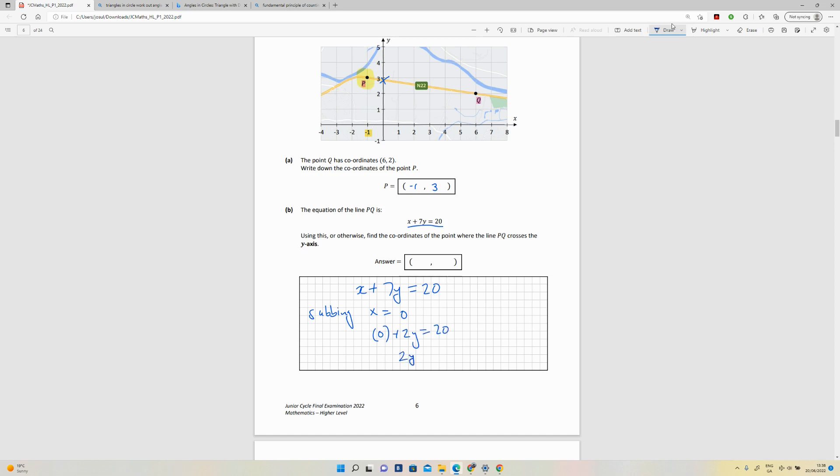So 2y is equal to 20... sorry, that's a 7. So y is equal to 20 over 7, which is 2.857142 recurring.